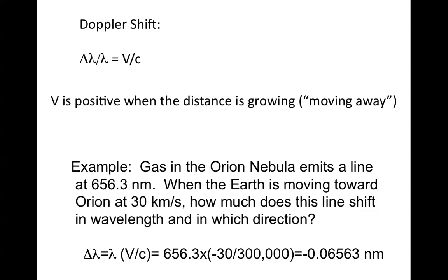When the Earth is moving towards Orion at 30 kilometers a second, how much does this line shift in wavelength and in which direction? So Δλ/λ equals V/c. So if we multiply that equation both sides by lambda, we have delta lambda is equal to the wavelength lambda times V over C. So the wavelength is 656.3, and the velocity is minus 30 kilometers a second, because we're moving towards the source. The speed of light is 300,000 kilometers a second. And when you multiply that all through, you wind up with a shift of minus 0.06563 nanometers. So the wavelength of light gets shorter by about 0.07 nanometers in this example.